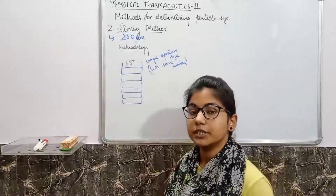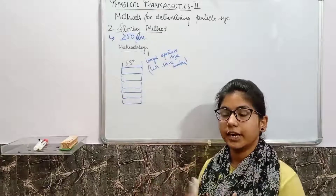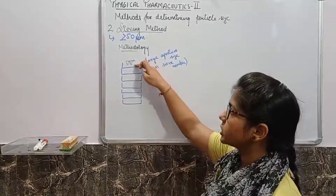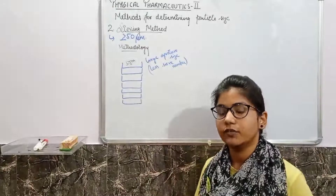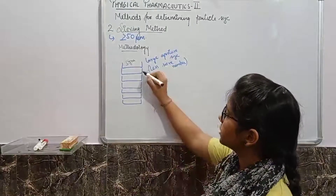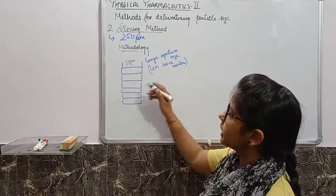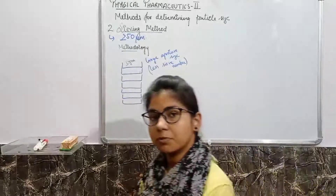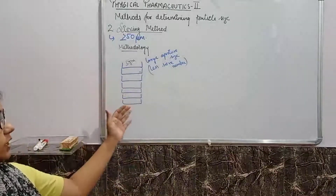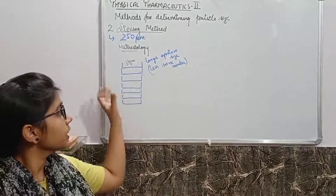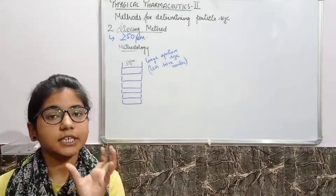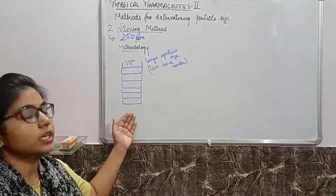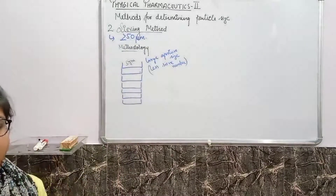You shake the sieves manually or with a mechanical shaker. When you shake them, the particles shift — bigger particles remain on top sieves while smaller particles pass down through to the lower sieves. Each sieve retains particles according to its aperture size, distributing the sample among the various sieves.